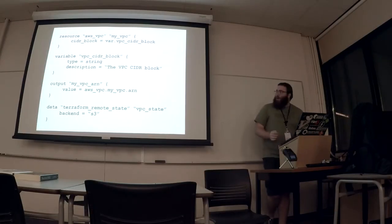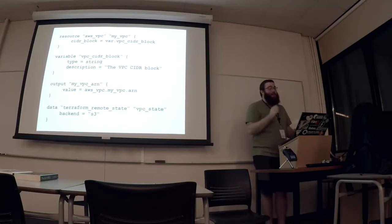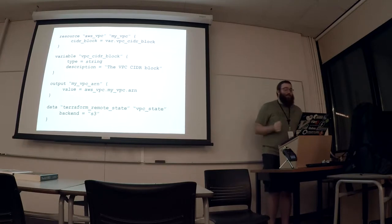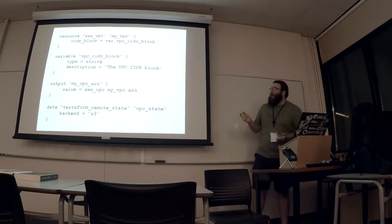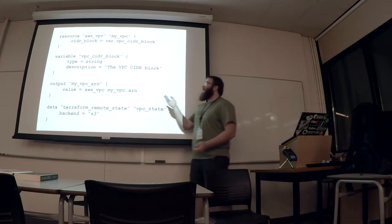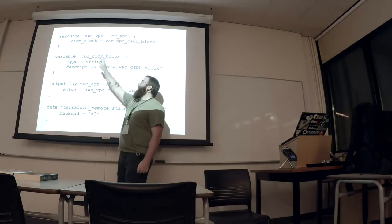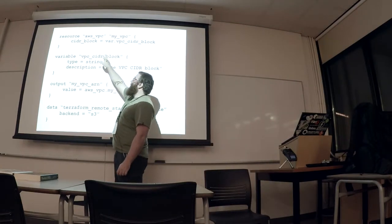So here's a code example — this might be my last slide. Here's all the blocks I was talking about. We've got a resource block, and in this case it's an AWS VPC.